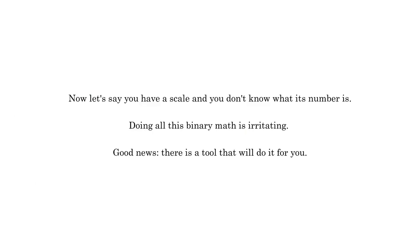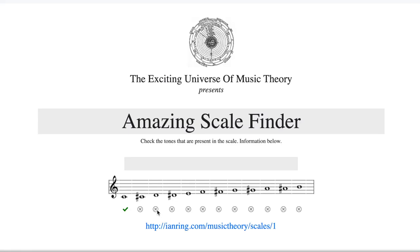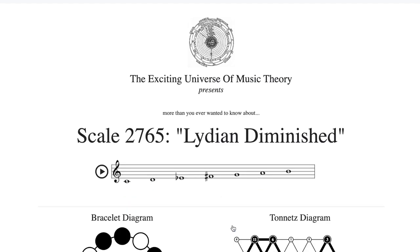Now let's say you have a scale and you don't know what its number is. Doing all this binary math is irritating. Good news, there is a tool that will do it for you. Go to ianring.com slash music theory slash scales slash finder. Click on the notes that are in your scale, and the binary sum will be displayed automatically, with no math required. It also provides a link to the scale detail page.